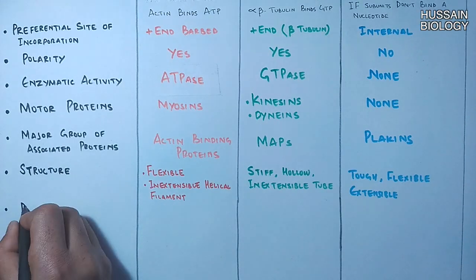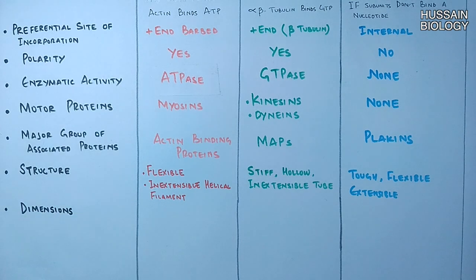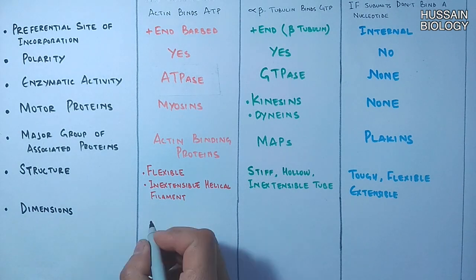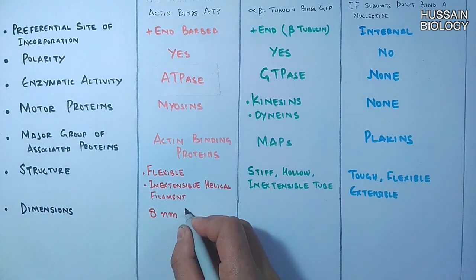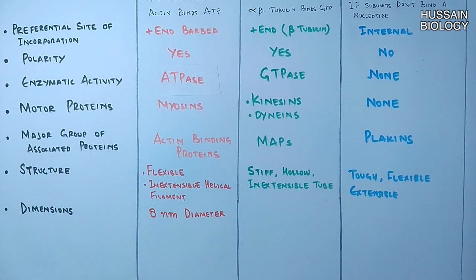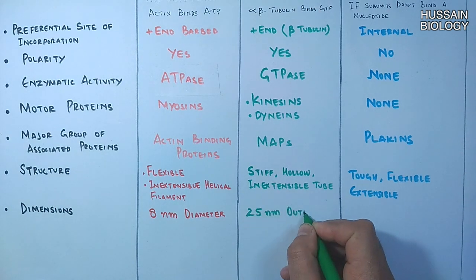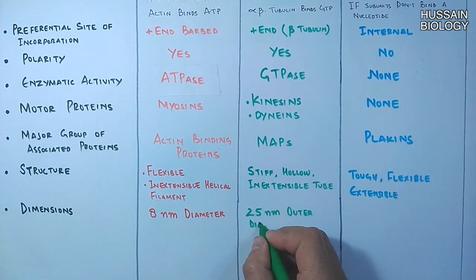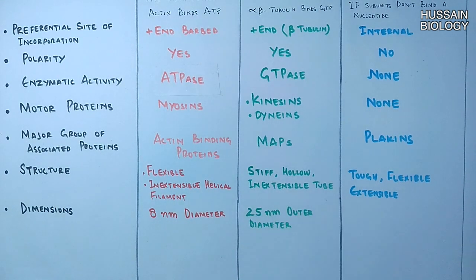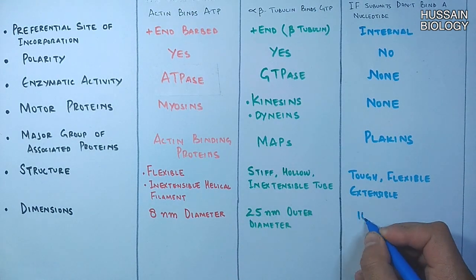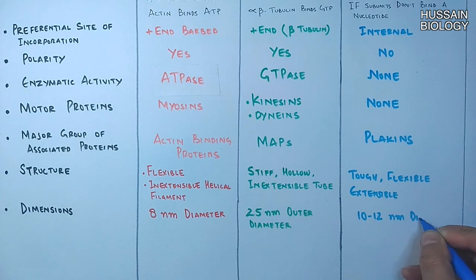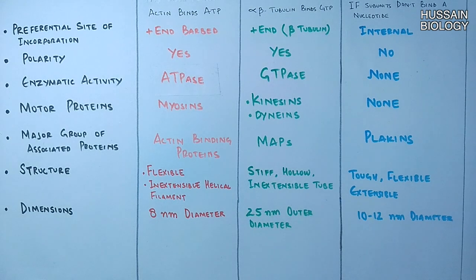Regarding size and dimensions, actin filaments have an 8 nm diameter, microtubules have a 25 nm outer diameter, and intermediate filaments have a diameter of 10 to 12 nm.